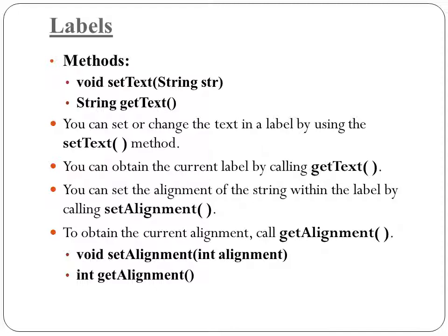The methods associated with Label are: setText() to set or change the text in a label, getText() to obtain the current label text, setAlignment() to set the alignment of the label string, and getAlignment() to retrieve the current alignment. The four main methods supported by the Label control are setText(), getText(), setAlignment(), and getAlignment().